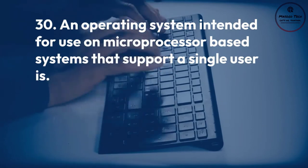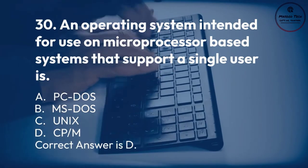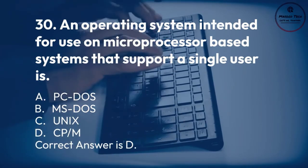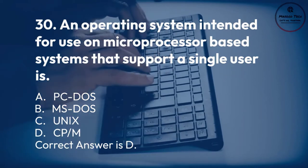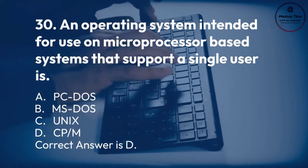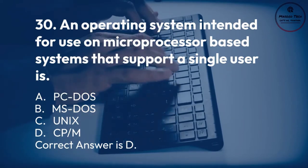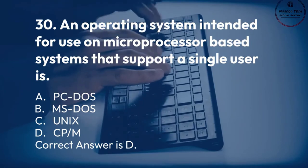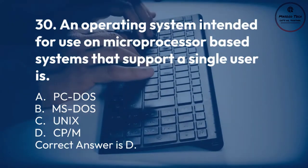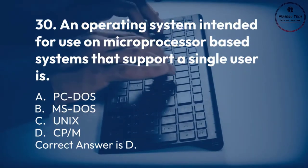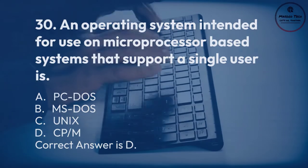Number 30. An operating system intended for use on microprocessor-based systems that support a single user is: A. PC-DOS. B. MS-DOS. C. UNIX. D. CP/M. Correct answer is D.